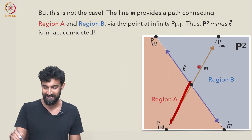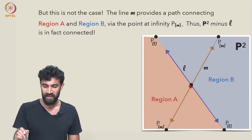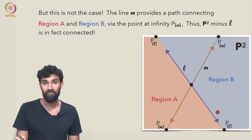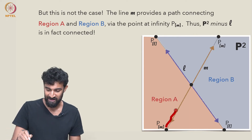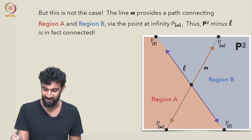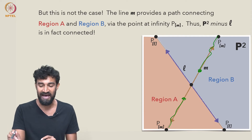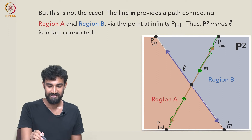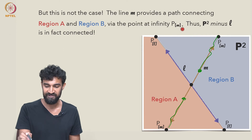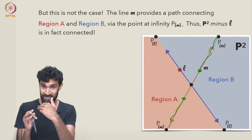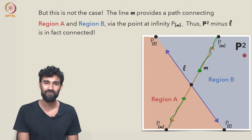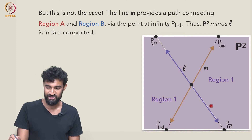In fact, it's not the case. To see that, let's draw another line M that intersects L at some point. Imagine we've subtracted L and now travel along M starting at some point. We travel along M, reach the point at infinity PM, and continue — eventually arriving back at a point on the other side. We've gone from region B to region A via this path along line M. Since M provides a path from region A to region B through that point at infinity, P2 minus L is in fact connected. Subtracting this circular line does not break up P2 — it remains just one region.